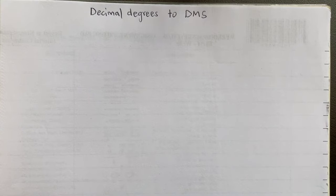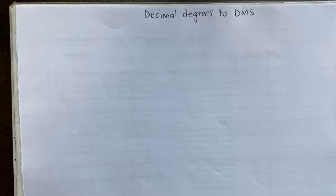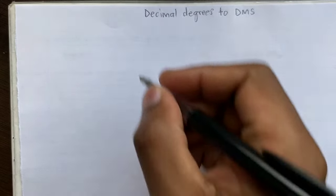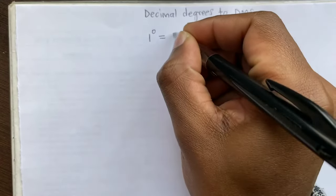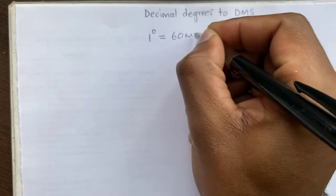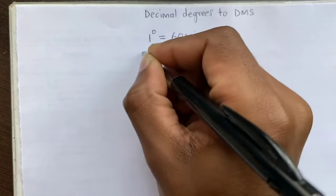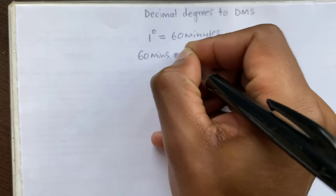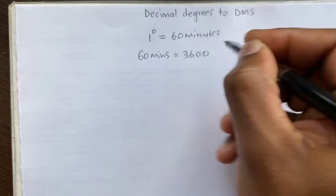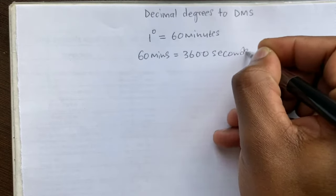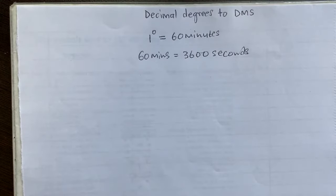In this video we look at how to convert from decimal degrees to degrees minutes and seconds, and from DMS to decimal degrees. To begin, you need to know the basic rule used in geography: one degree equals 60 minutes, and 60 minutes equals 3600 seconds.